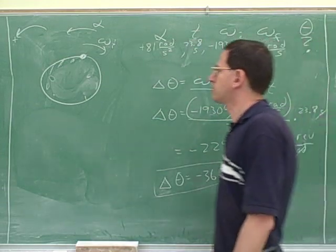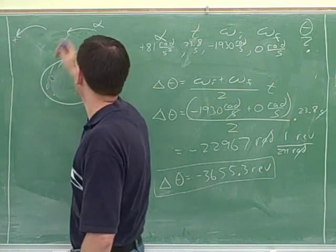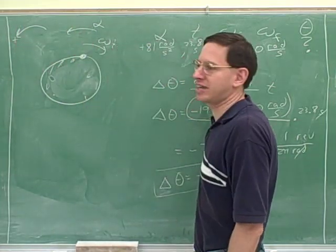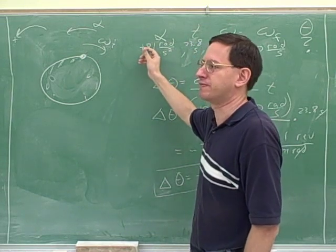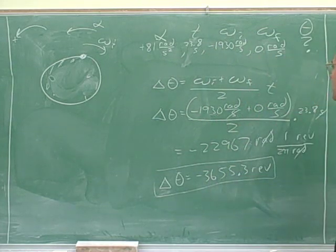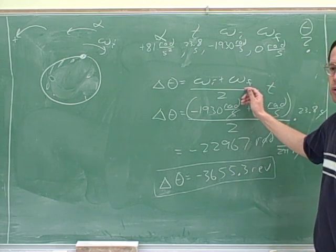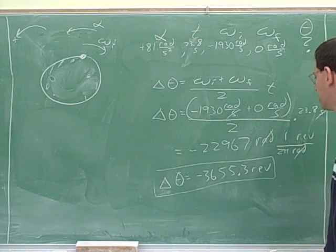Some other useful things: write down the positive direction, and actually show the directions of rotation with little curved arrows. Put in the signs, because if you don't put in the signs even in front of the positive numbers, you'll forget to put them in front of the negative numbers — and that's one of the traps you can expect to see on the test. Then you can pick from the equations. This might not be an equation your instructor will give you, so you might want to memorize it.